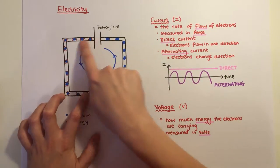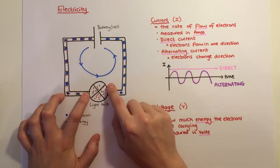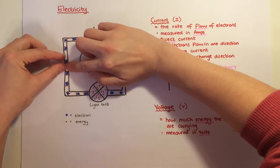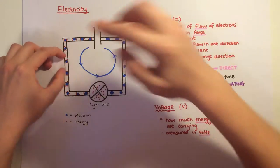direct current, which is shown in this diagram where the electrons just flow constantly in one direction, and alternating current where the electrons do move but just a little way, backwards and forwards, backwards and forwards.